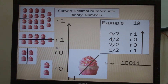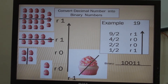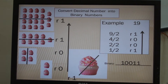4 divided by 2 is equal to 2, but there is no remainder — the remainder is 0. Then 2 divided by 2 is 1, but there is no remainder. Now the last one: 1 divided by 2 is 0.5, but instead you will write remainder 1.